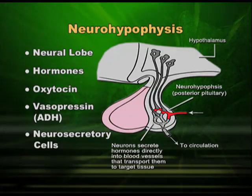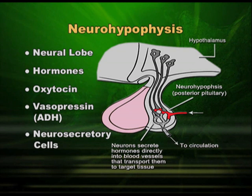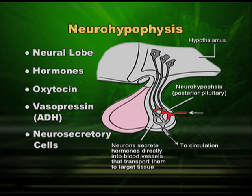Vasopressin is also known as ADH, antidiuretic hormone — it retains water in our body. It is also called vasopressin because it has a pressure effect on blood vessels and is responsible for correct blood pressure in our body. Oxytocin causes milk ejection during lactation and downward contraction of the uterus during delivery. Both hormones are secreted in the hypothalamus, transported to, and stored in the neural lobe, and discharged into the blood when the body requires them.